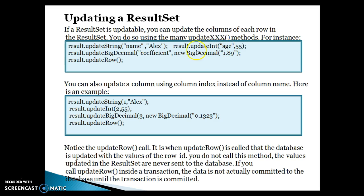If you want to update an int column, call resultSet.updateInt and pass the column name as well as the updated value. Similarly you can update other column values. Finally, you will have to call updateRow, which will trigger an internal commit — because auto-commit in JDBC is true — and that will update the data in the database. You can also update a column using the column index instead of column name; for example, index 1 for the first column, index 2 for the second, and so on.